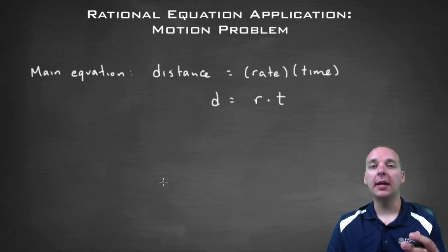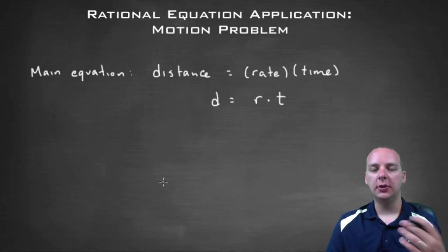A very popular type of application problem dealing with rational equations is this type of problem called a motion problem, where what you'll have is usually two trips, either like a going and a coming, or an up river and a down river, or something like that where the rates of speed that you're traveling are different on one trip versus another trip.